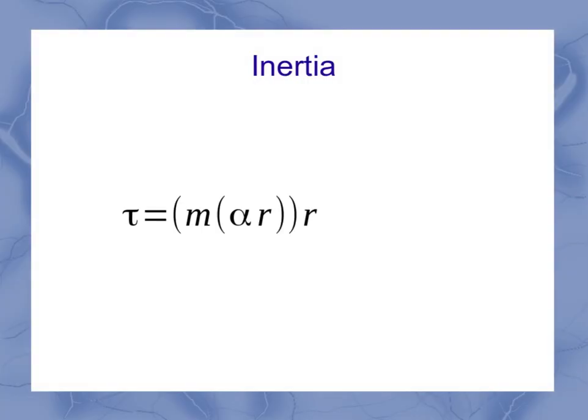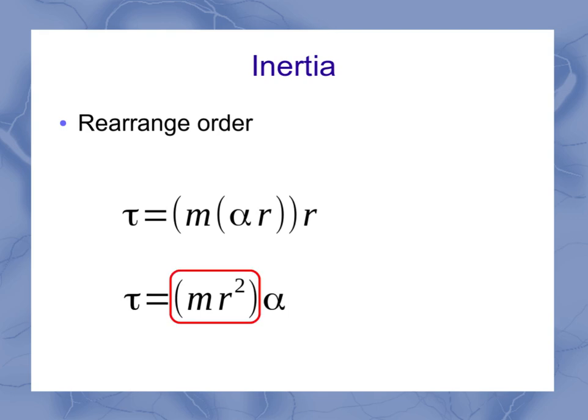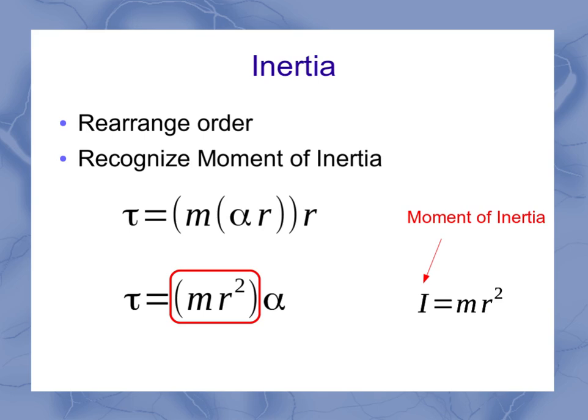So now I've got my equation here. And the first thing I'm going to do is rearrange the order of some of these terms. So I haven't changed the equation itself. I've just regrouped everything else out in front with my alpha behind. Now, I've got this quantity here. And from our review, we'll recognize that that is the moment of inertia, where I can use the symbol capital I to stand for that m r squared moment of inertia part of the equation.